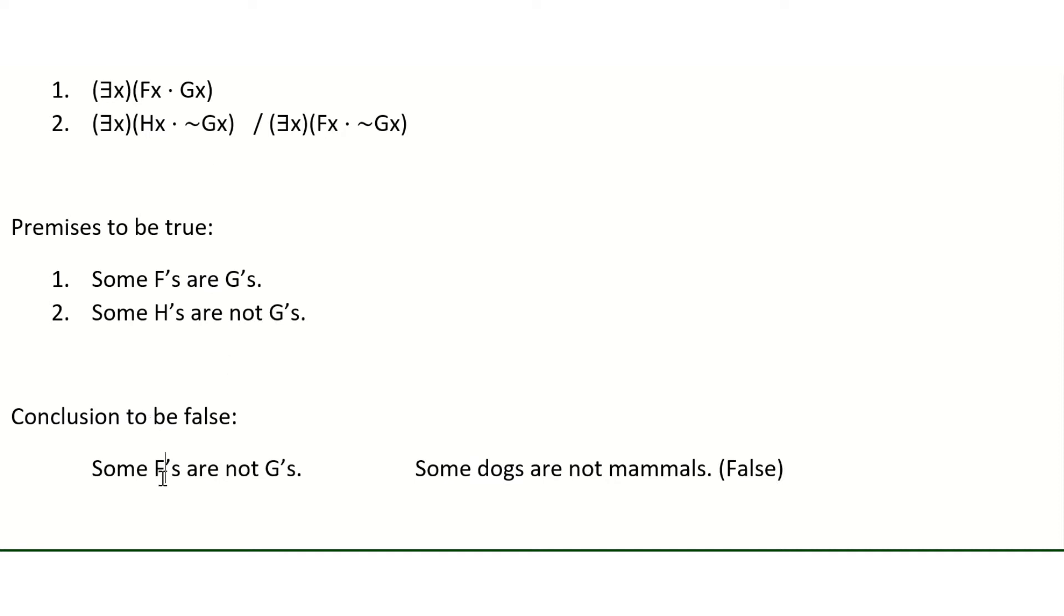Now, notice what we're doing with the forms here. So Fs is being replaced with the term dogs and Gs is being replaced with mammals. Now, for a counterexample to be successful, not only do the premises have to be true and the conclusion obviously false, but the form has to stay the same.